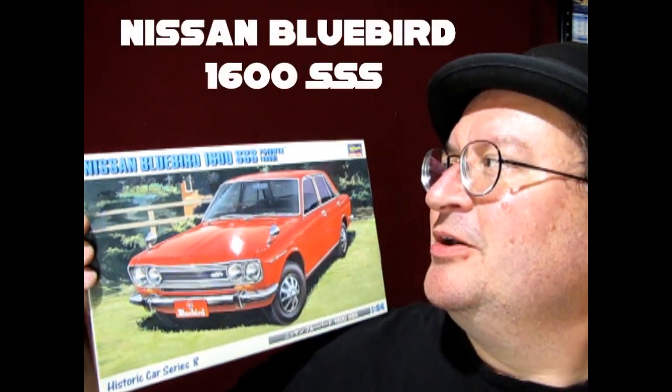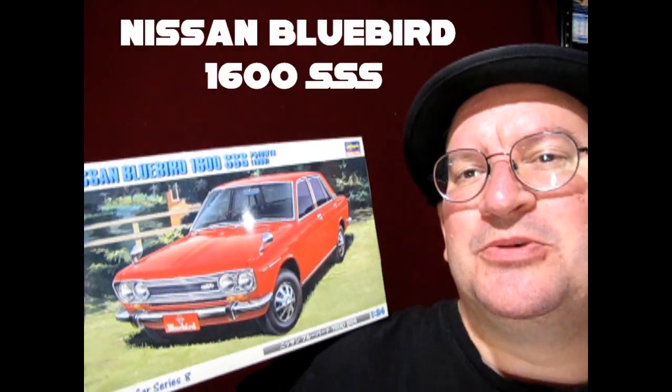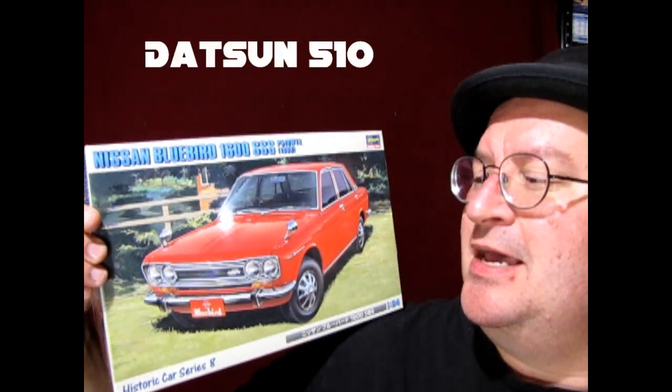Hello everybody and welcome back to another Monster Hobbies model car garage. Today we are unboxing a really cool car. This is the Nissan Bluebird 1600 SS, or as we knew it over here in North America as the Datsun 510. This is a Hasegawa kit and it's gonna be a lot of fun. So without further ado let's go down to the bench and see what's in the box.